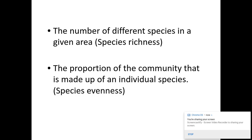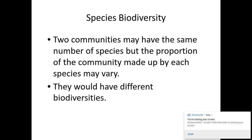Species richness is the number of different species within a given area, whereas species evenness is the proportion of the community made up of individual species — that is, the number of individuals within each species.